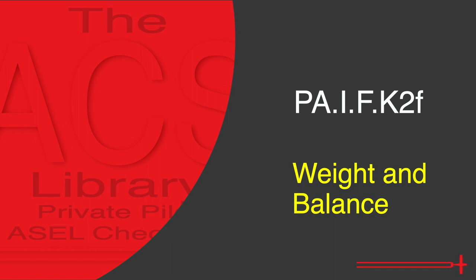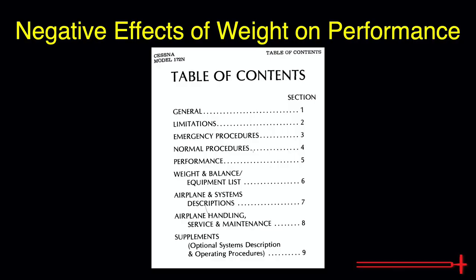Information for today's video is found in the FAA's Weight and Balance Handbook, Chapter 1, Weight and Balance Control. This reference is also linked below. The maximum allowable weight of an aircraft is found in the limitations section of the aircraft's POH, typically Section 2.